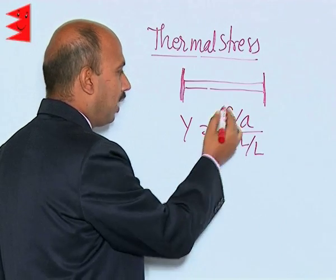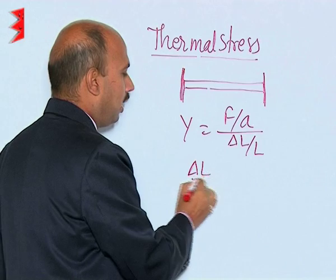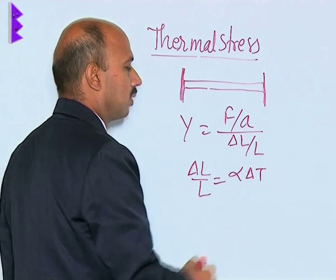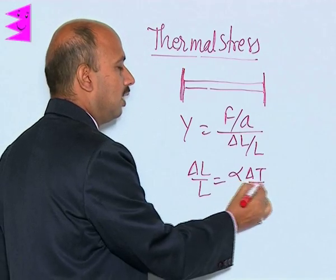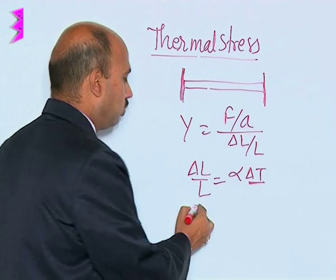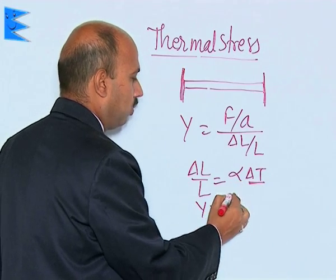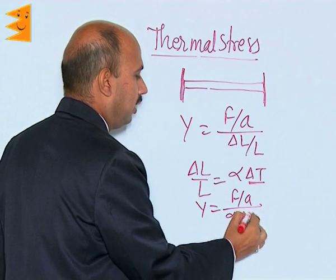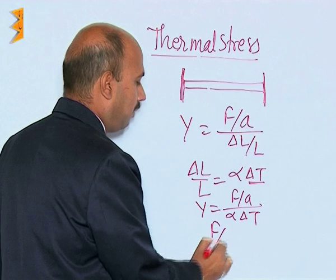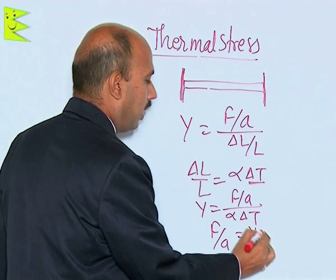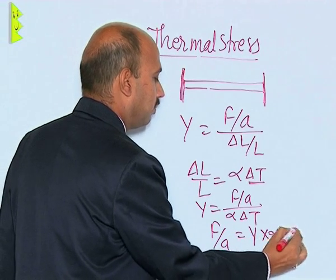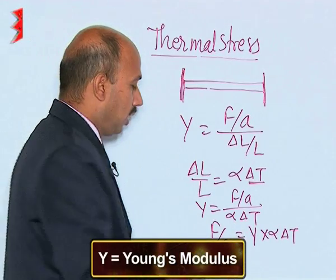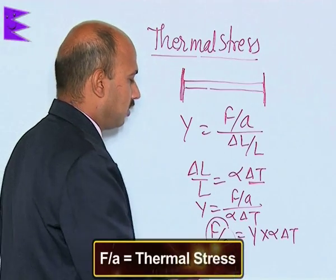Now, you can write delta L upon L is equal to alpha delta T, where delta T is the increase in temperature. So we can write Y is equal to (F upon A) upon (alpha delta T), and therefore F upon A can be written as Y into alpha delta T. Here Y is Young's modulus, and this quantity is the thermal stress.